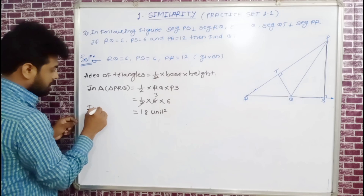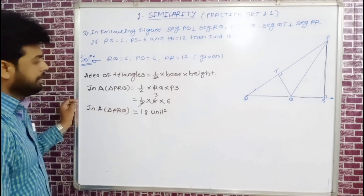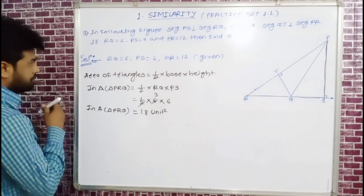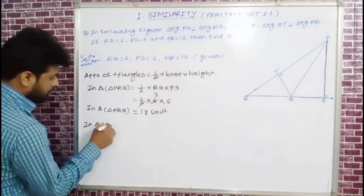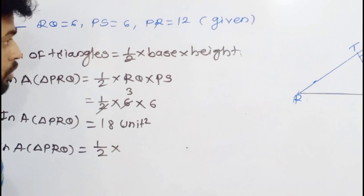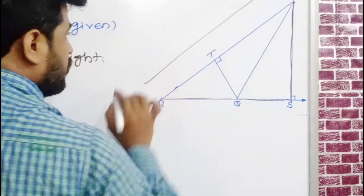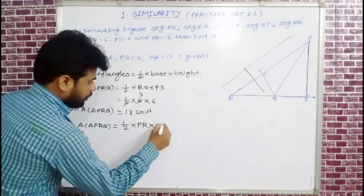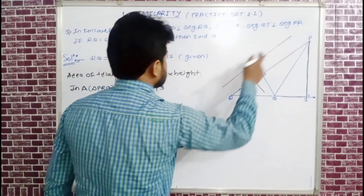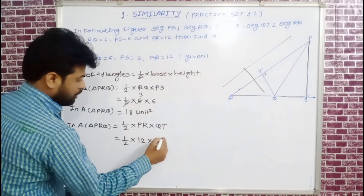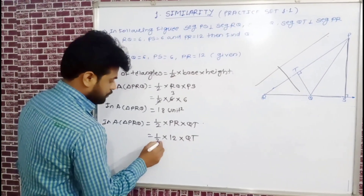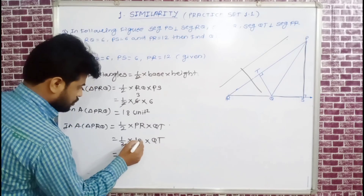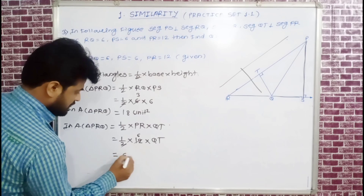Area of triangle PRQ = 18 square units. Now, for the same triangle PRQ, taking PR as the base, the corresponding height is QT. So area of triangle PRQ = ½ × PR × QT. With PR = 12, this gives 18 = ½ × 12 × QT = 6 × QT.